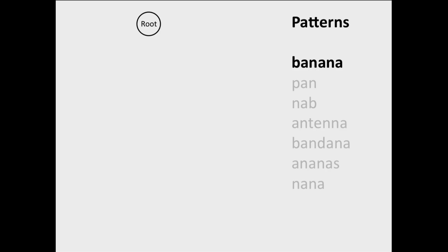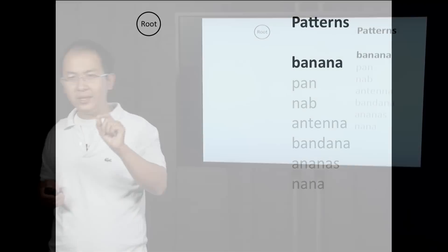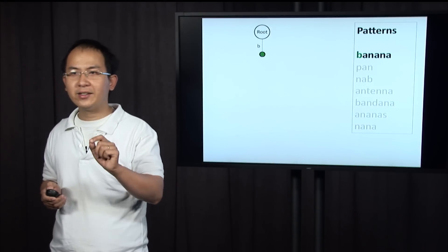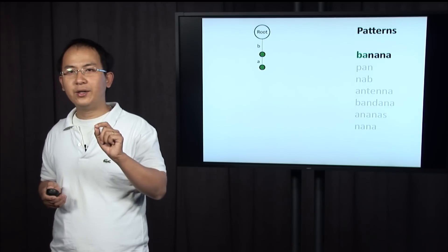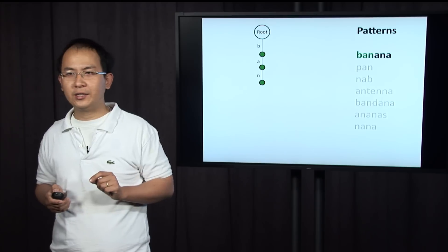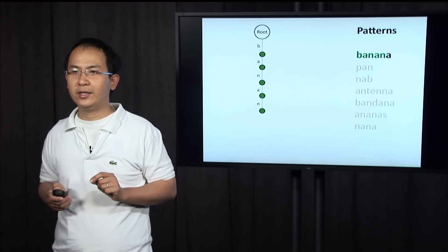Every string in the patterns corresponds to a path from root to leaf. Let's go through an example to understand how we can construct a trie from a collection of patterns. We start with a root, and the first pattern is banana. From the root, the first character is B — there's no B, so we create a new branch labeled B. The next character is A, so we create a new branch labeled A, and so on.